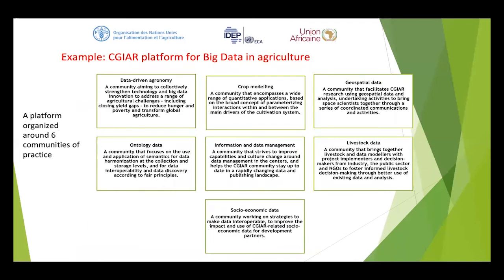So those are the communities I've just been explaining in detail. To summarize, the CGIAR platform communities of practice are: data-driven agronomy, crop modeling, geospatial data, ontological data, information and data management, livestock data, and socioeconomic data. I encourage each one of you to go and read more about all of these, and depending on what interests you most, focus more on that.